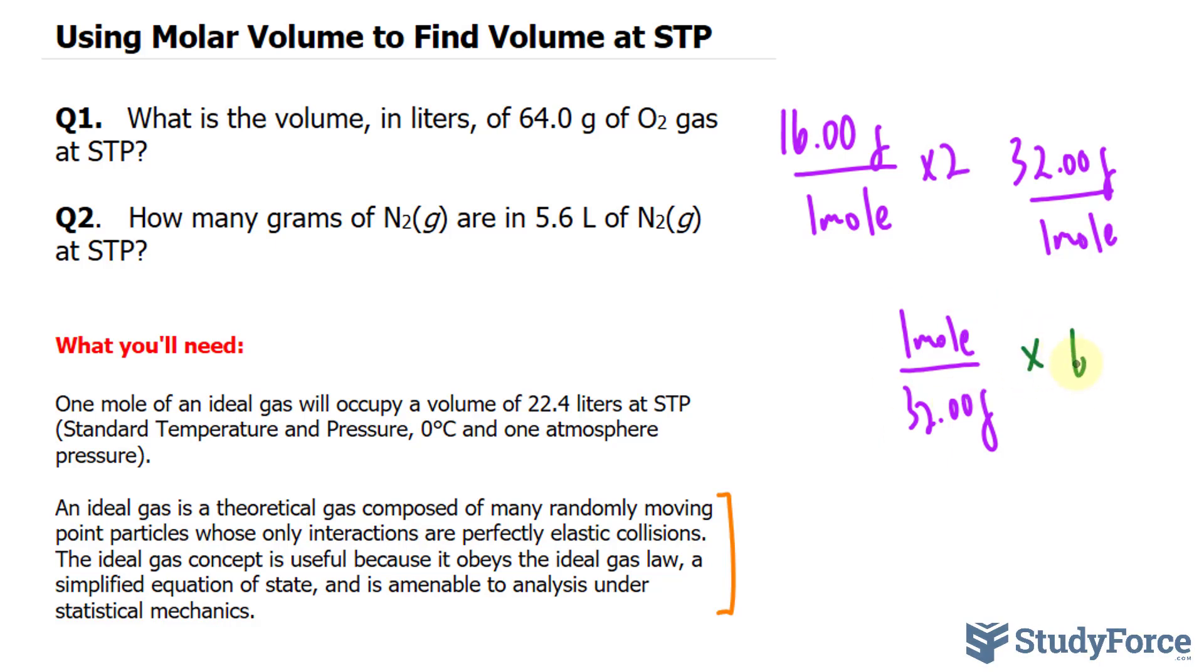by 64.0 grams, the gram unit will cancel out, giving us the amount of oxygen in moles. Now, if I multiply 64.0 by one over 32.00, I'll end up with two moles. And of course, this should be three significant figures, so 2.00.